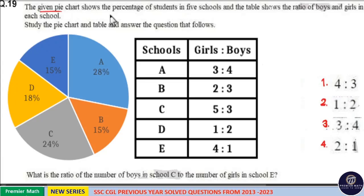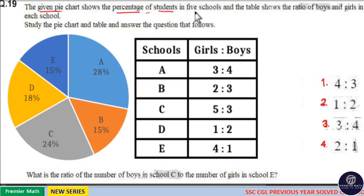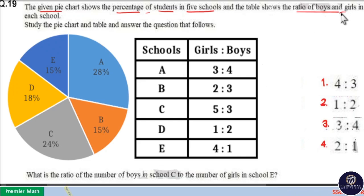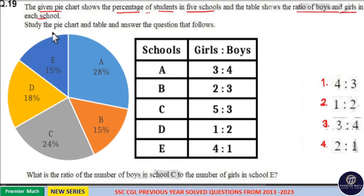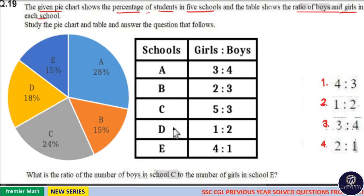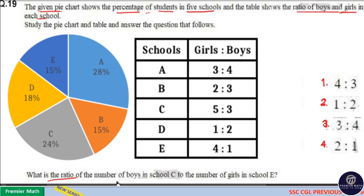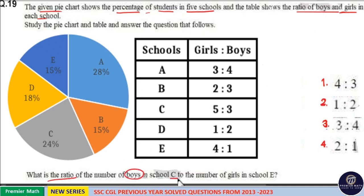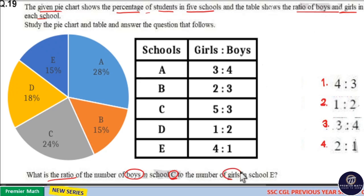The given pie chart shows the percentage of students in 5 schools, and the table shows the ratio of boys and girls in each school. Study the pie chart and table and answer the question that follows. The question is: what is the ratio of number of boys in school C to the number of girls in school E?